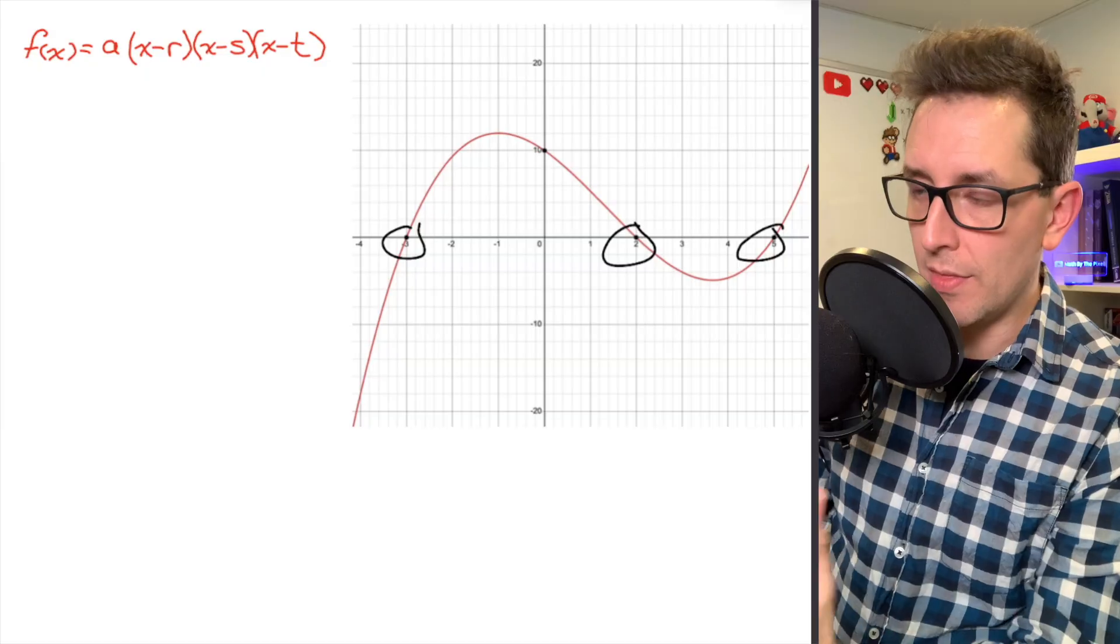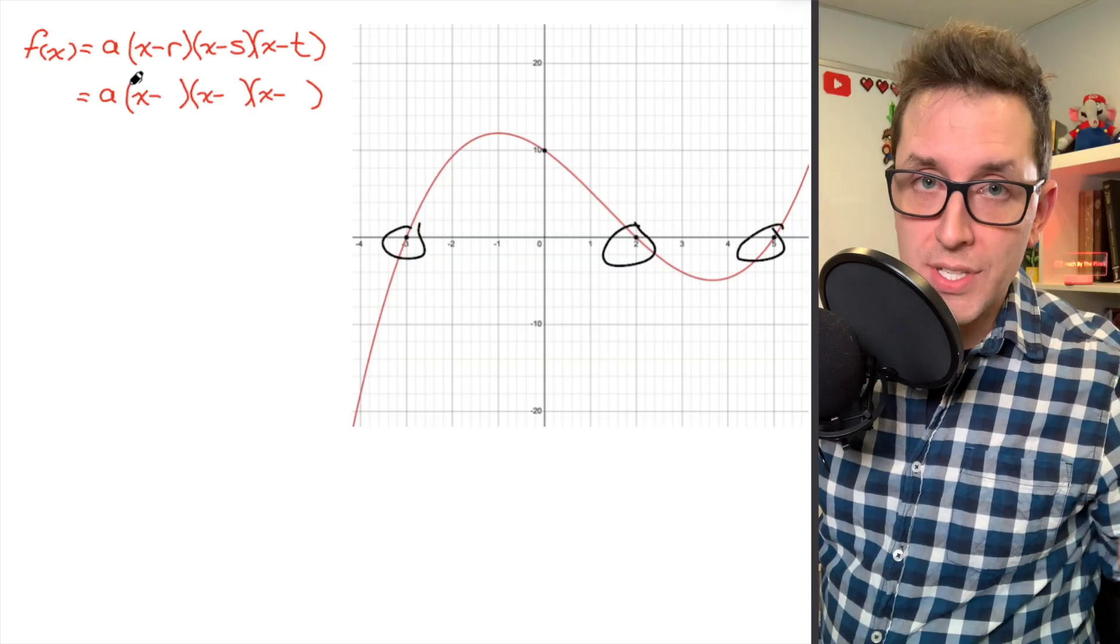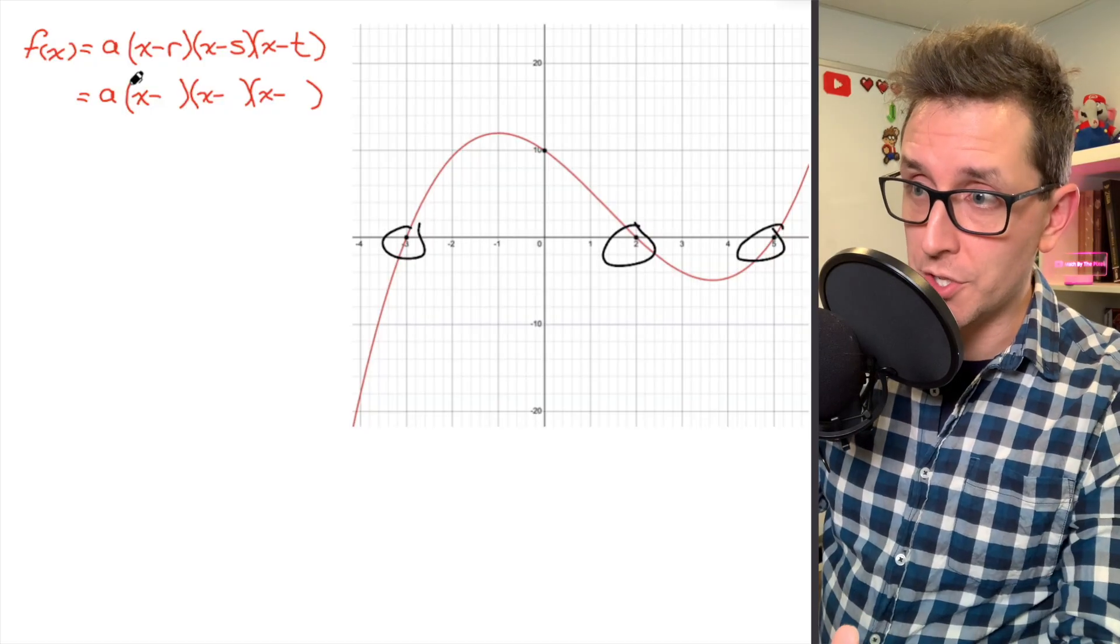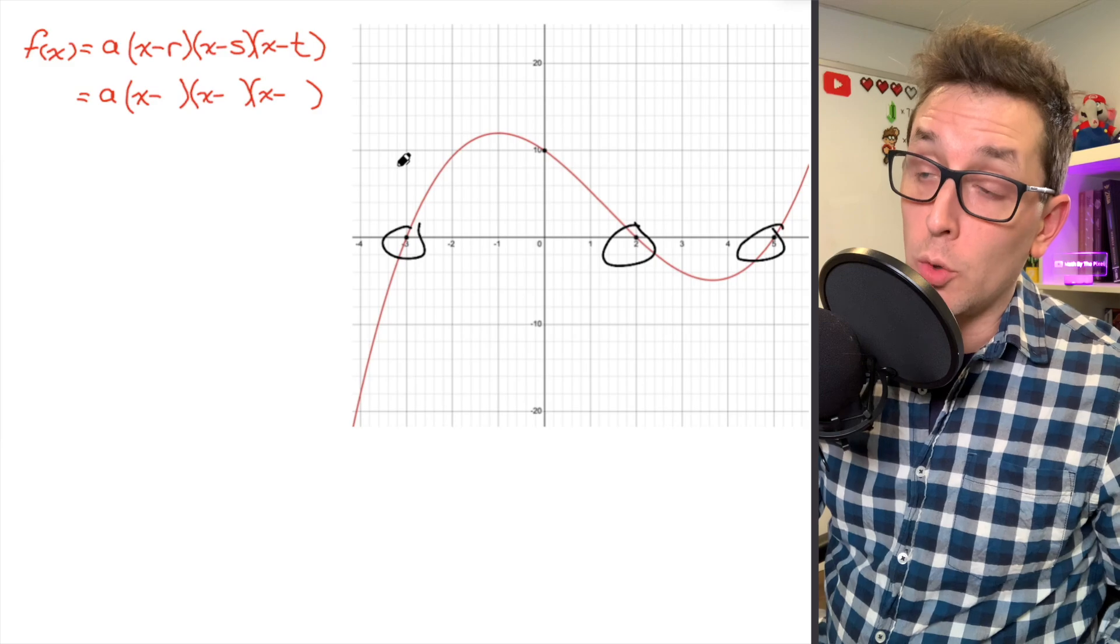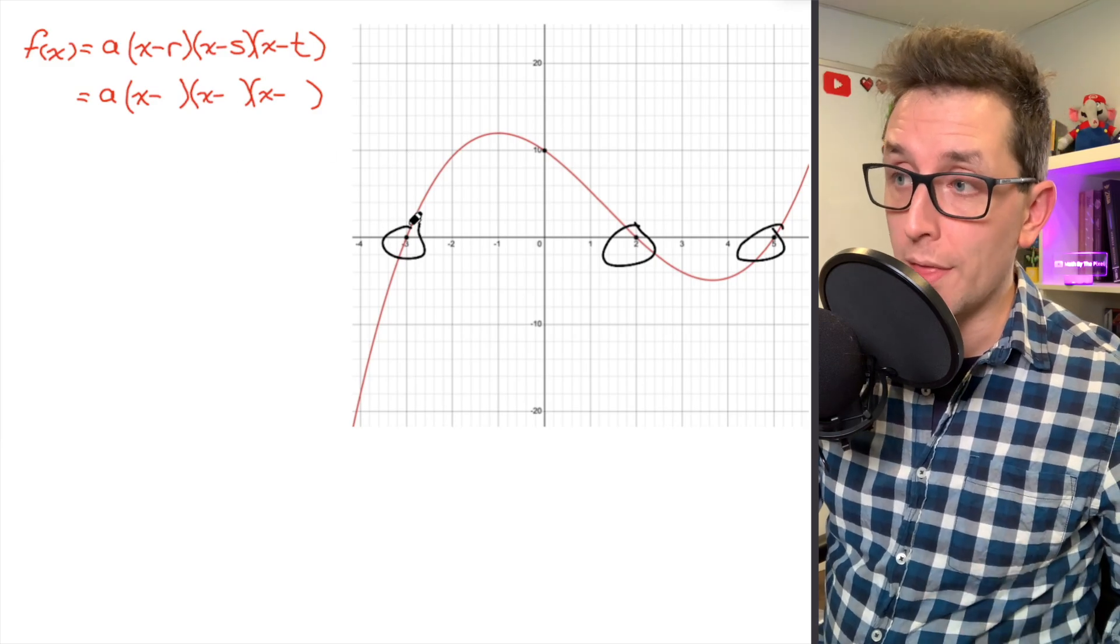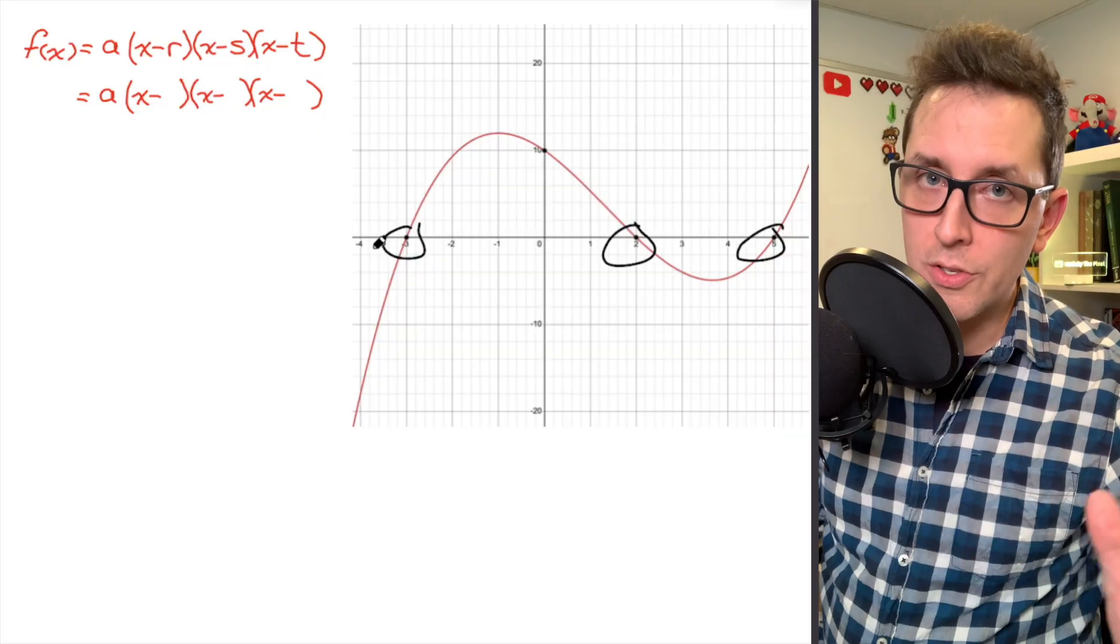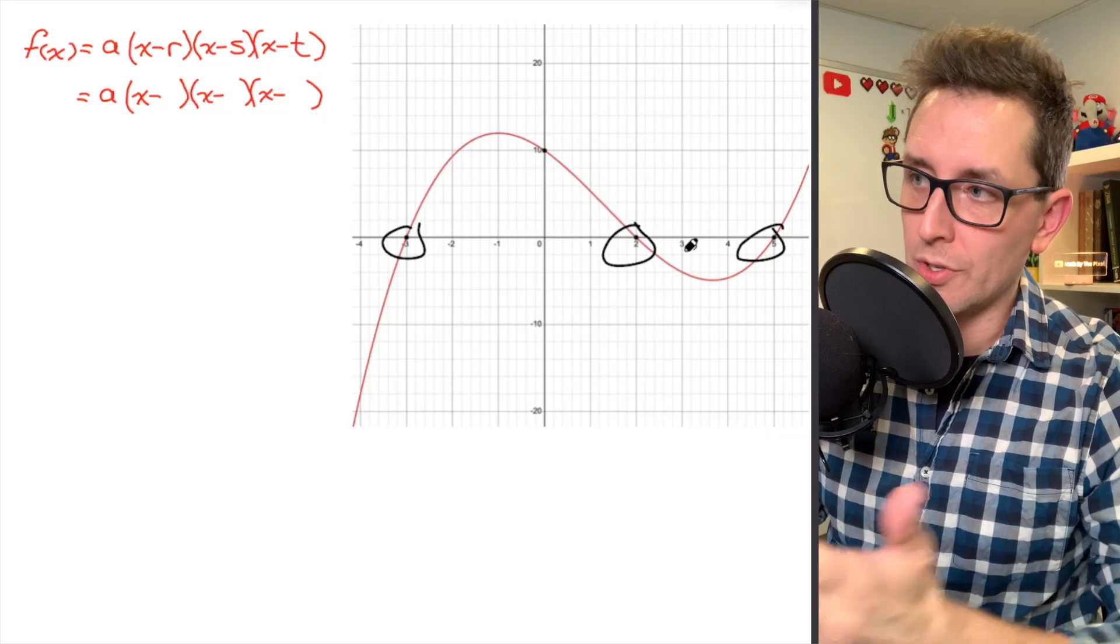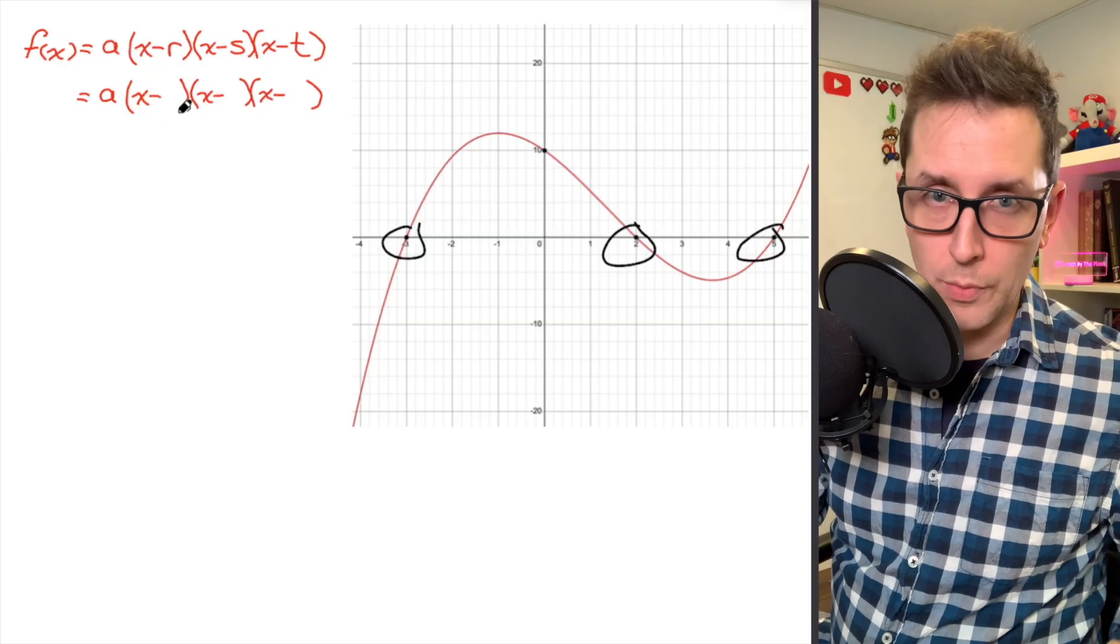So what I want to do is take that information and somehow translate it over to my equation. I've duplicated my factored form equation here, and I've removed the r, s, and t parameters. What I want to do is replace each of those parameters with one of the x-intercepts that we just circled on our graph. The order that you do this in doesn't really matter. I'm going to go from left to right just to keep things simple. I'm going to start with that negative 3 and replace r with negative 3.